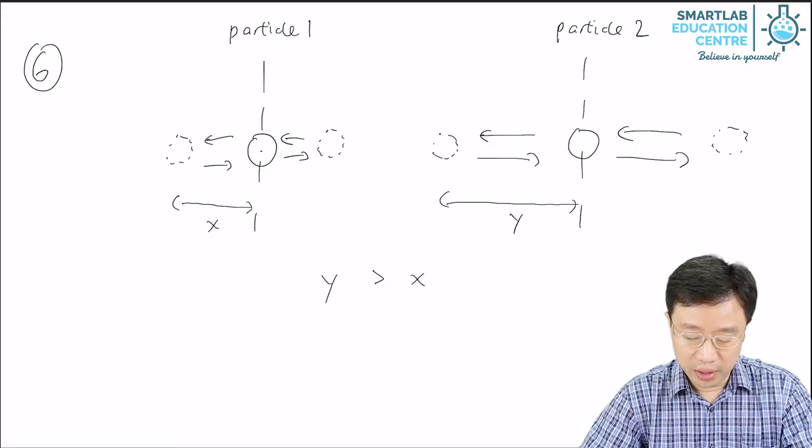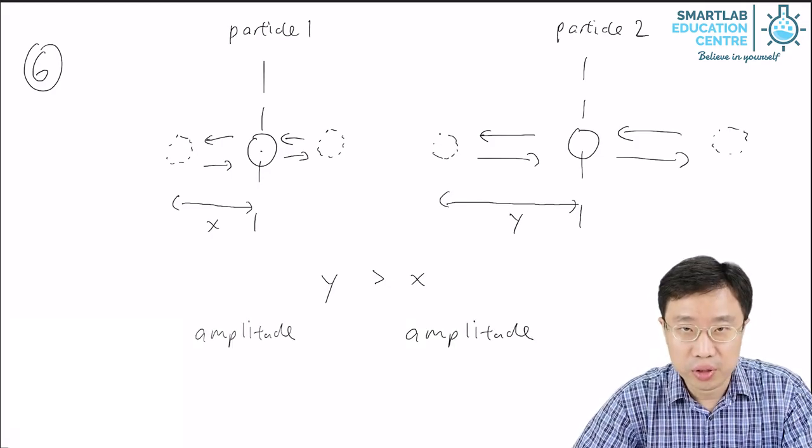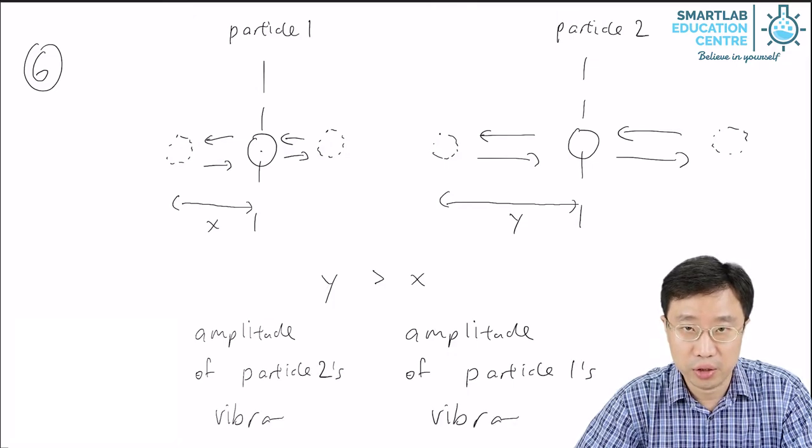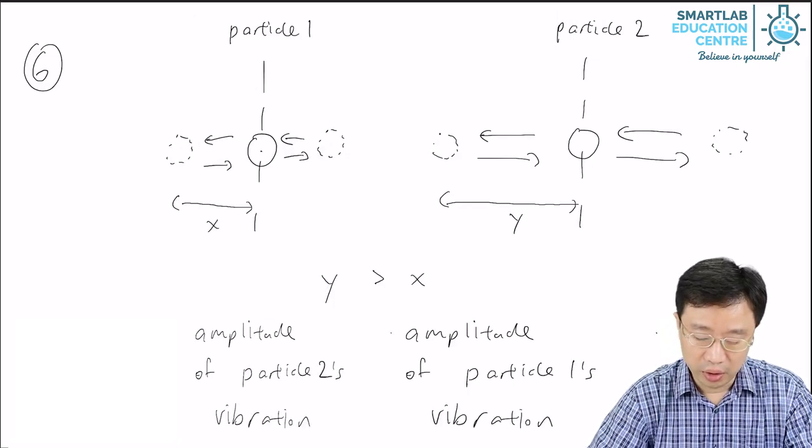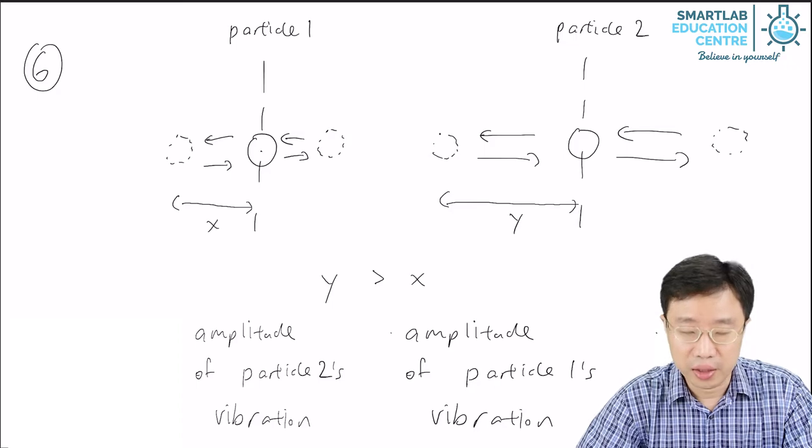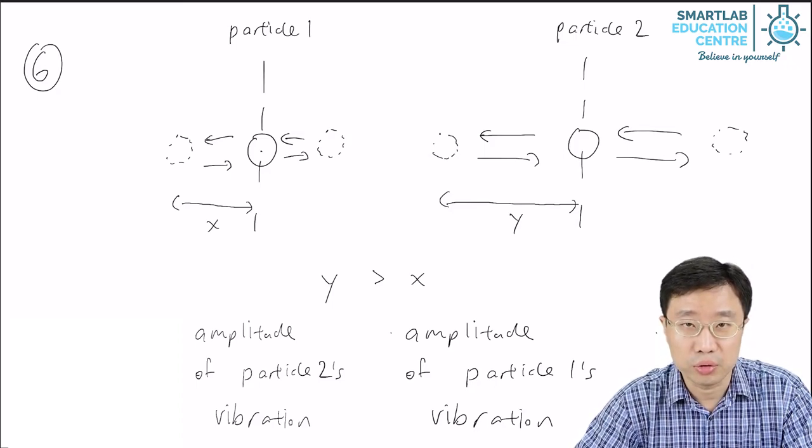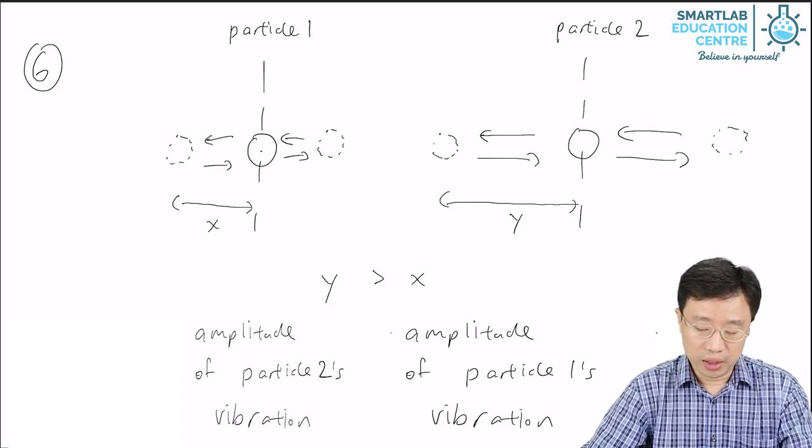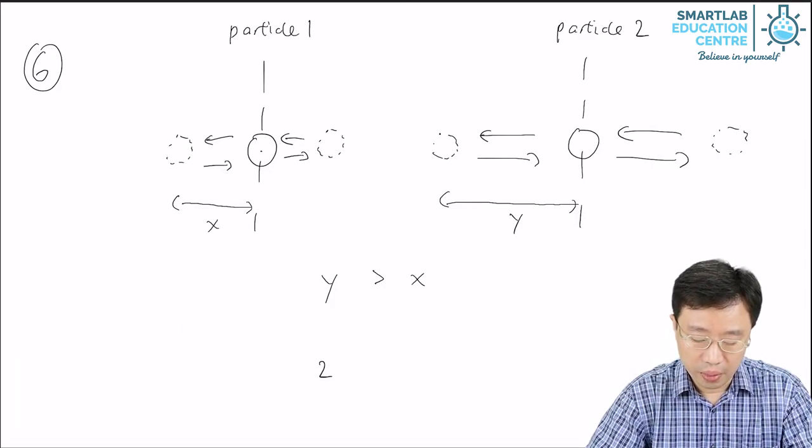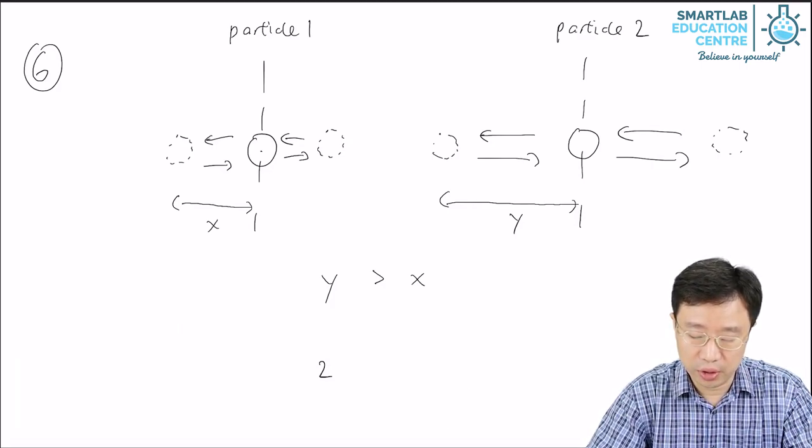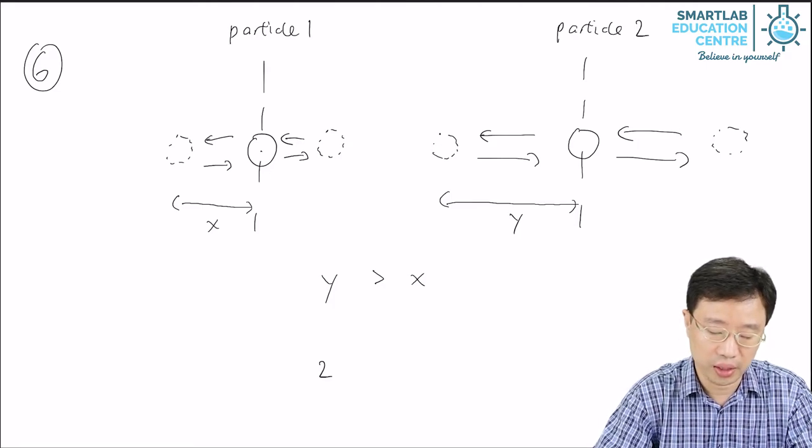We say that x is the amplitude of the vibration of particle one. We say that y is the amplitude of the vibration of particle two. You can tell that the amplitude of vibration of particle two is greater than that of particle one.